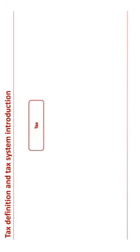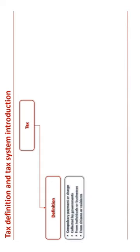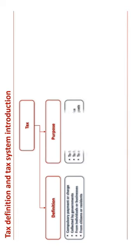Let's start with tax definition and what does it mean. Tax is a compulsory payment or charge collected by governments from individuals or businesses, also citizens or residents. So why? This is for the purpose of funding public expenditure and governmental activities and to achieve certain economic goals.